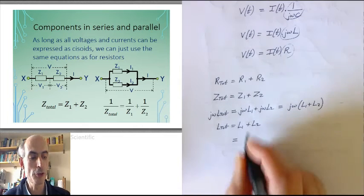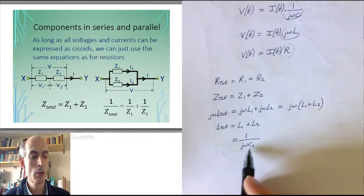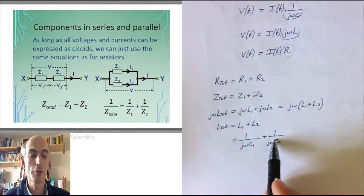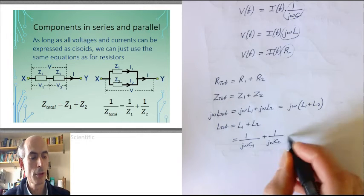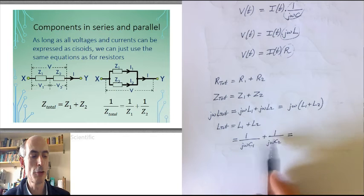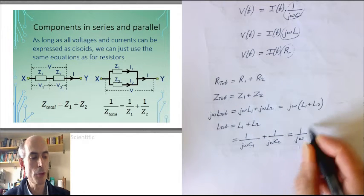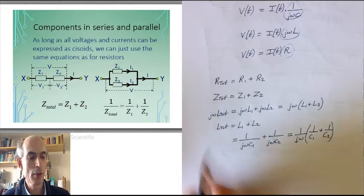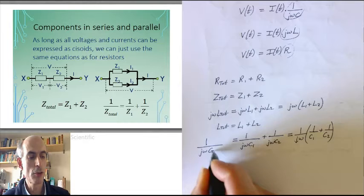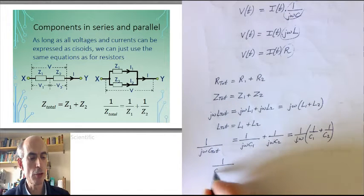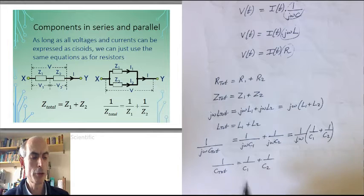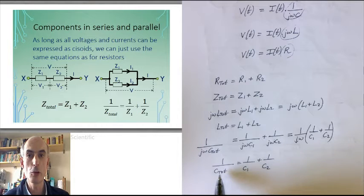Similarly, if we put two capacitors in series, then 1 over jωC1 — the complex impedance of the first capacitor — plus 1 over jωC2 — the complex impedance of the second capacitor — must equal the total complex impedance of the combination. This is 1 over jω times (1/C1 + 1/C2). We can identify that as the complex impedance of a capacitor with value C_total, where 1 over C_total equals 1 over C1 plus 1 over C2. So combining two capacitors in series requires this formula to find the total effective capacitance.